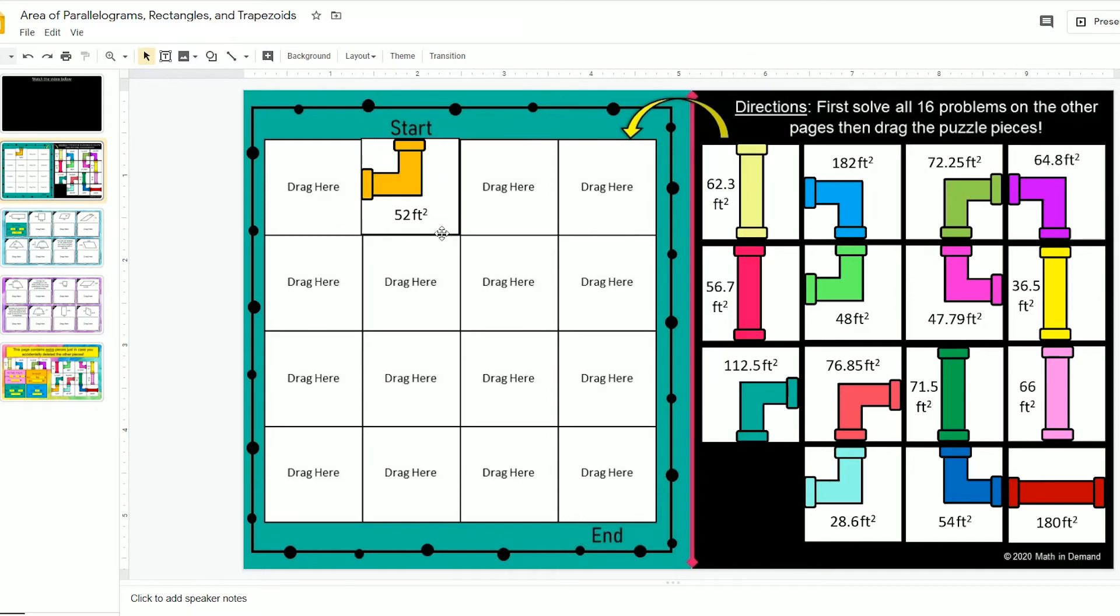You can see it's not perfectly on, so I can highlight it. I can hold down shift and move to the right on my keyboard and move down a little bit until I get it right on there. That looks pretty good.